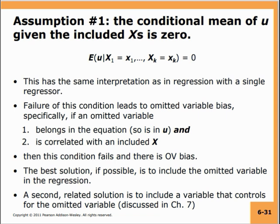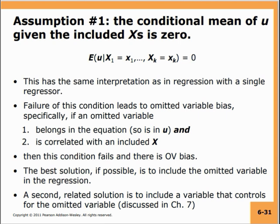Specifically, if an omitted variable belongs in the equation — so it is in u — and is correlated with an included x, then this condition fails and there is omitted variable bias. The beta 1 hat through beta k hat you estimate may be biased if you have missed out on including some important variable that affects y and is also correlated with one of the included regressors. Whenever you build a regression model, consider whether there may be omitted variable bias.